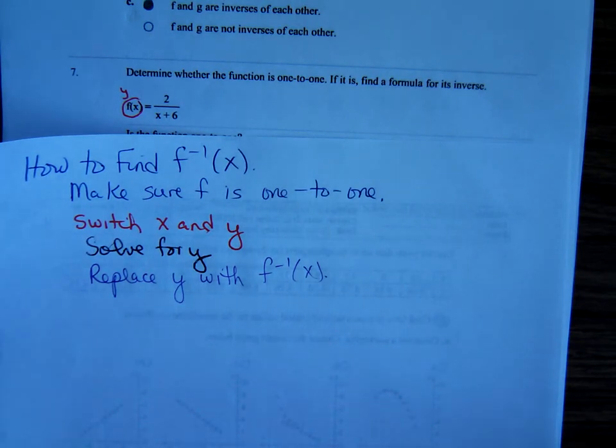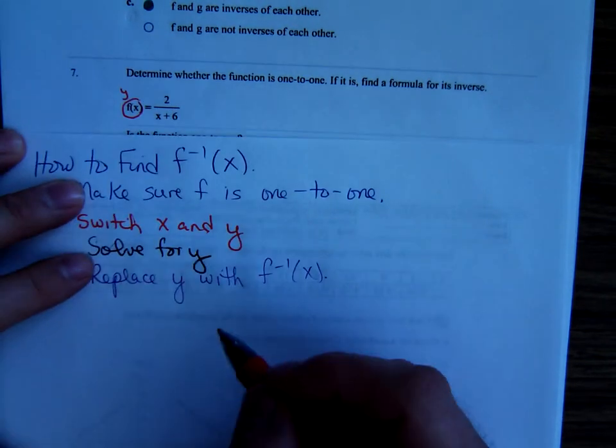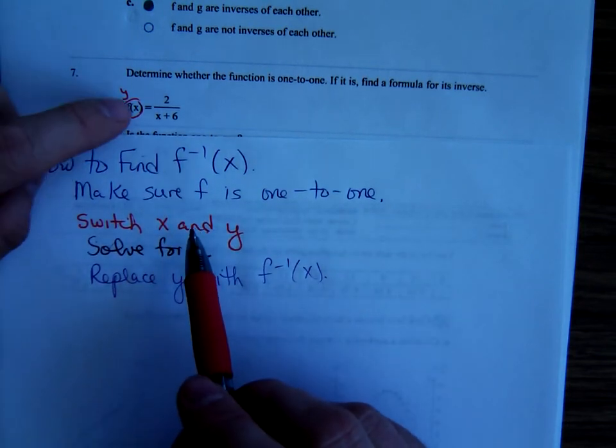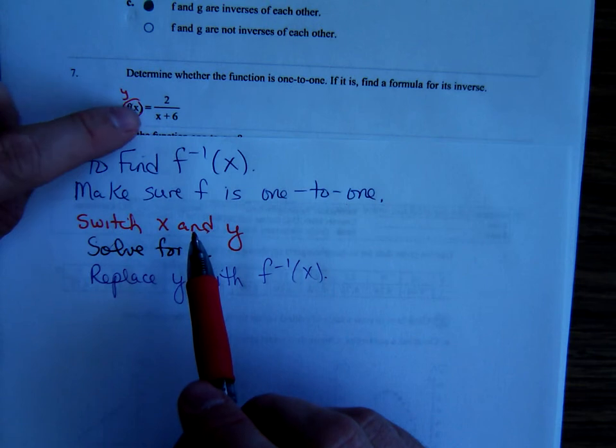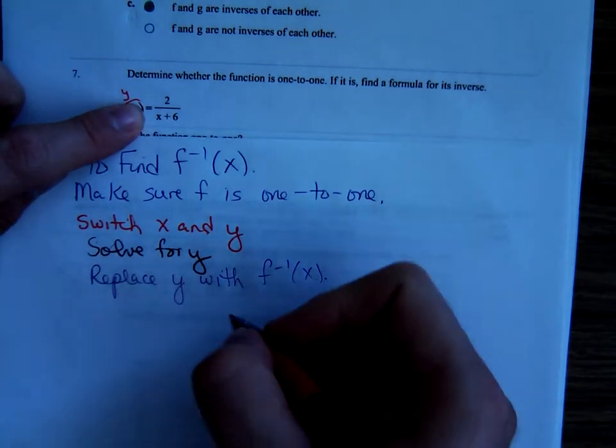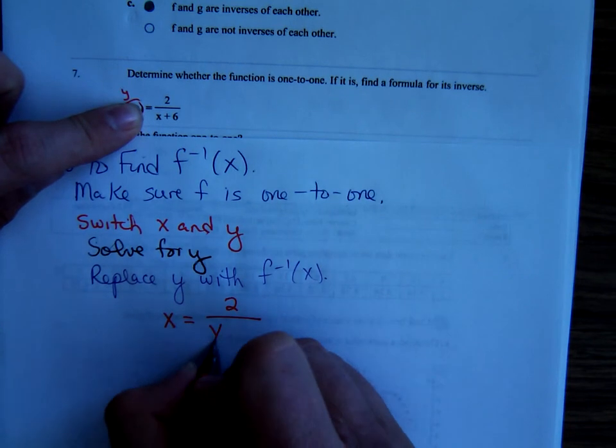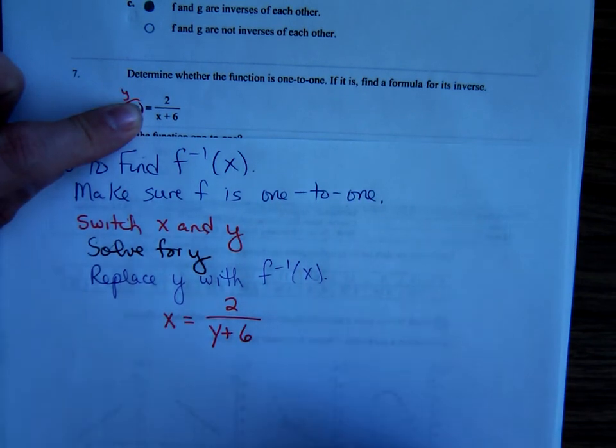Well, we've already said, yeah, on number 7, it's one-to-one. So, now let's switch x and y. Remember, f of x is a y. So, we'll write it like this. x equals 2 over y plus 6.